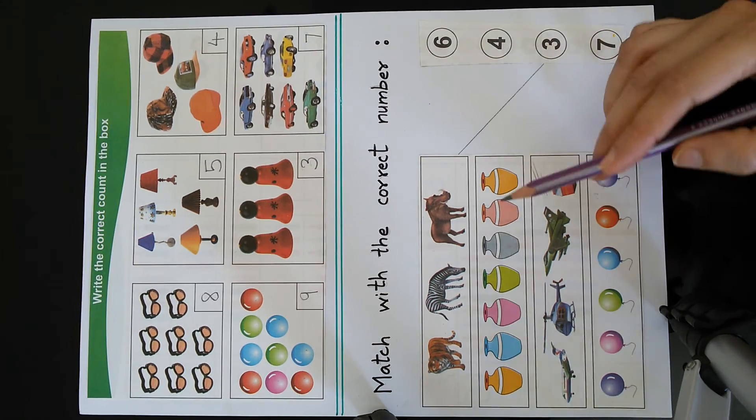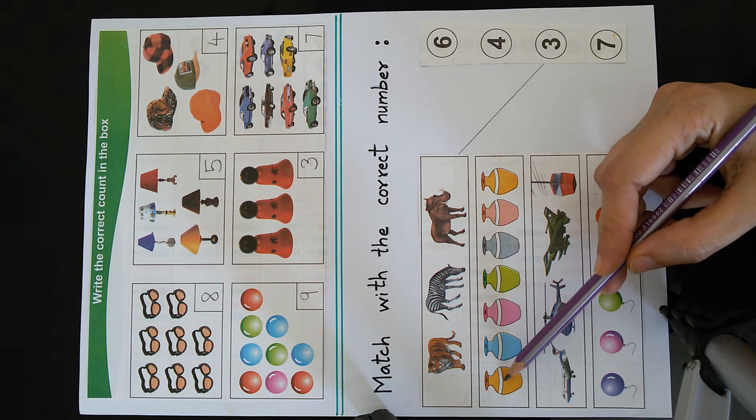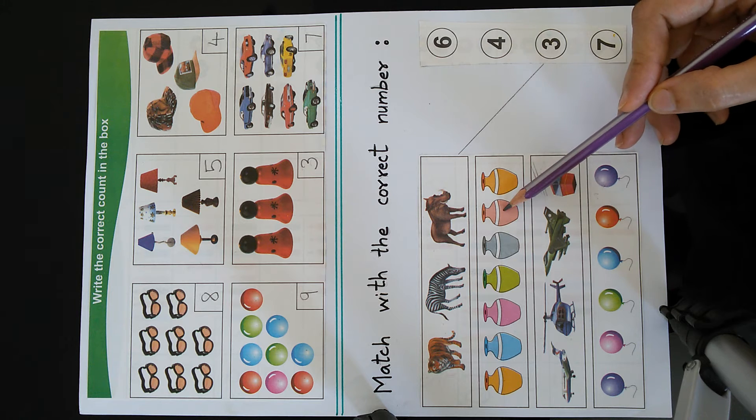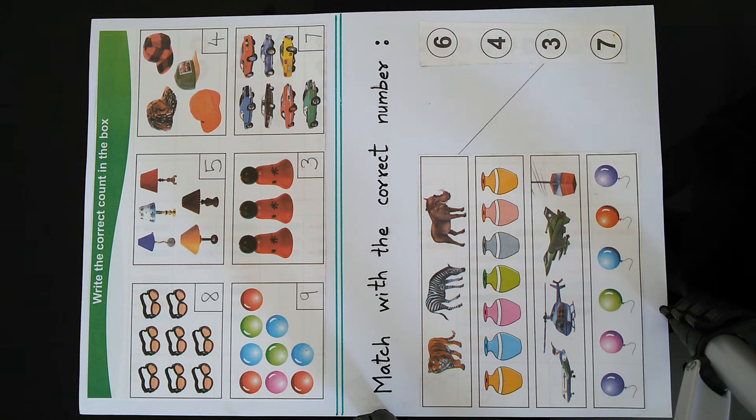The next picture shows pots. Let us count them. 1, 2, 3, 4, 5, 6, 7. So there are 7 pots.